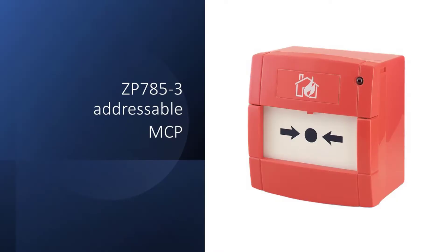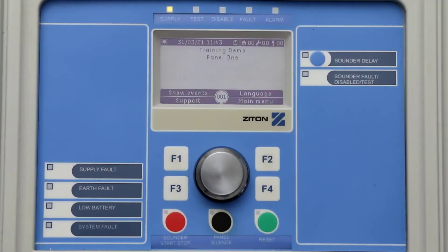This clip will demonstrate how to change a manual call point operating mode, zoning and device message. To make changes to a MCP credentials, you need to be logged in as an installer.